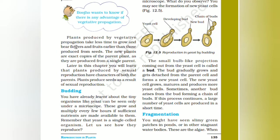Plants produced by vegetative propagation take less time to grow and bear flowers and fruits earlier than those produced from seeds. The new plants are exact copies of the parent plant as they are produced from a single parent.